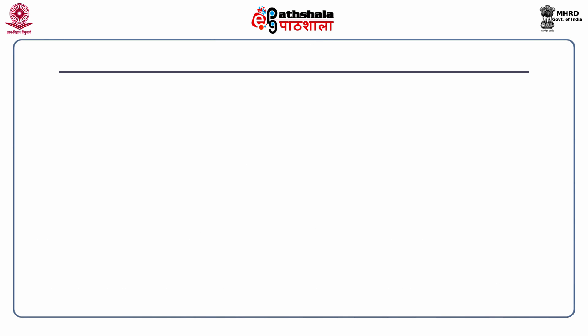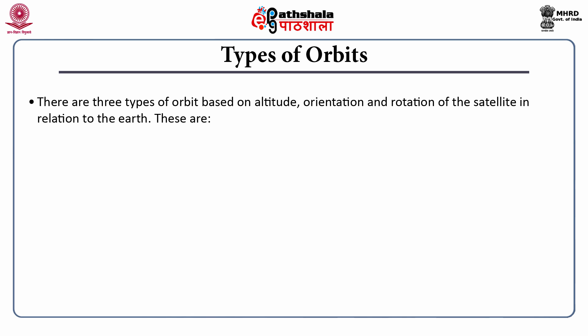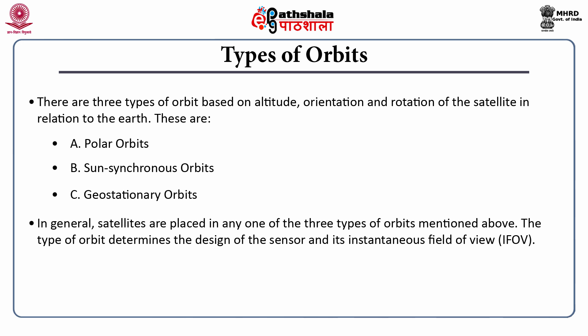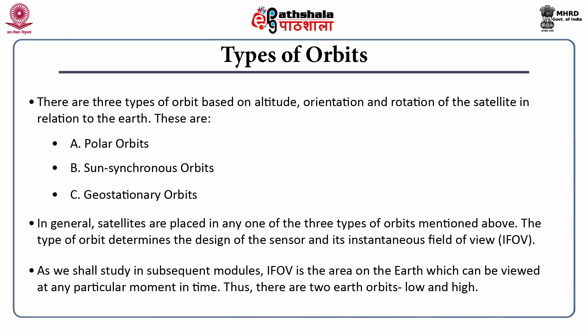Now let us have a look at the types of orbits. There are three types of orbits based on altitude, orientation and rotation of the satellite in relation to the Earth. These are polar orbits, sun synchronous orbits and geostationary orbits. In general, satellites are placed in any one of these three types of orbits. The type of orbit determines the design of the sensor and its instantaneous field of view, which we call as IFOV — the area on the Earth which can be viewed at any particular moment in time.